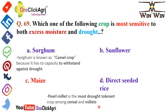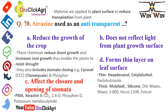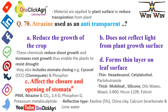Question 70: Atrazine used as an anti-transpirant affects the closing and opening of stomata. Other examples that affect stomata include PMA, CO₂, 2,4-D, Phosphon-D, potassium, and metabisulphide. An anti-transpirant is a material applied to the plant surface to reduce transpiration from the plant.